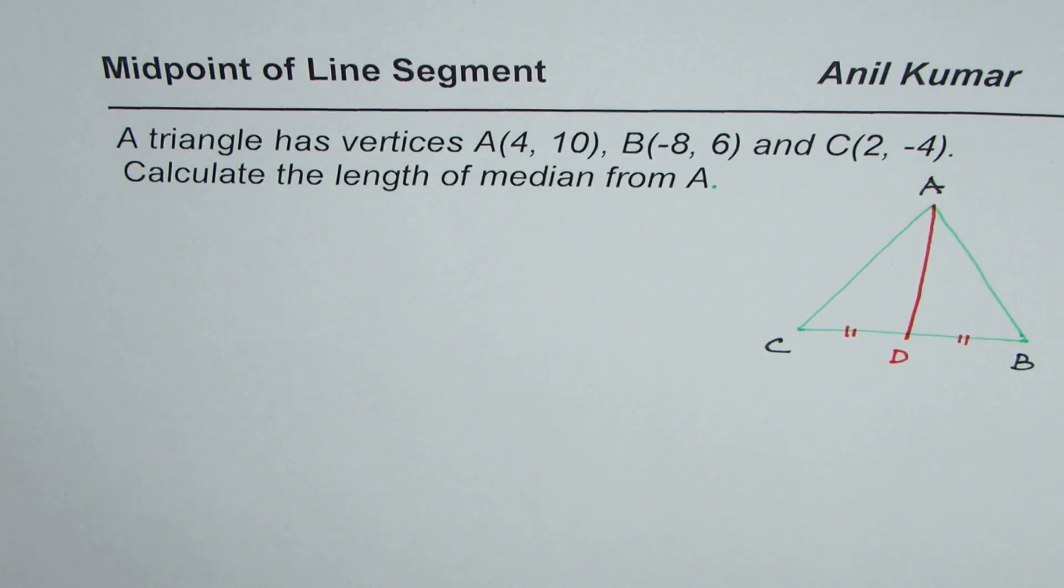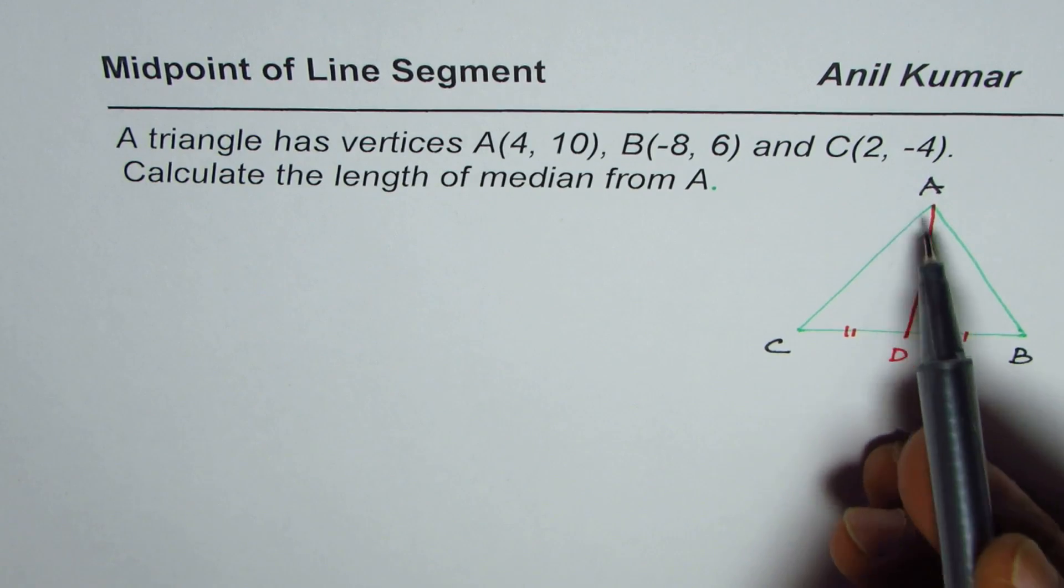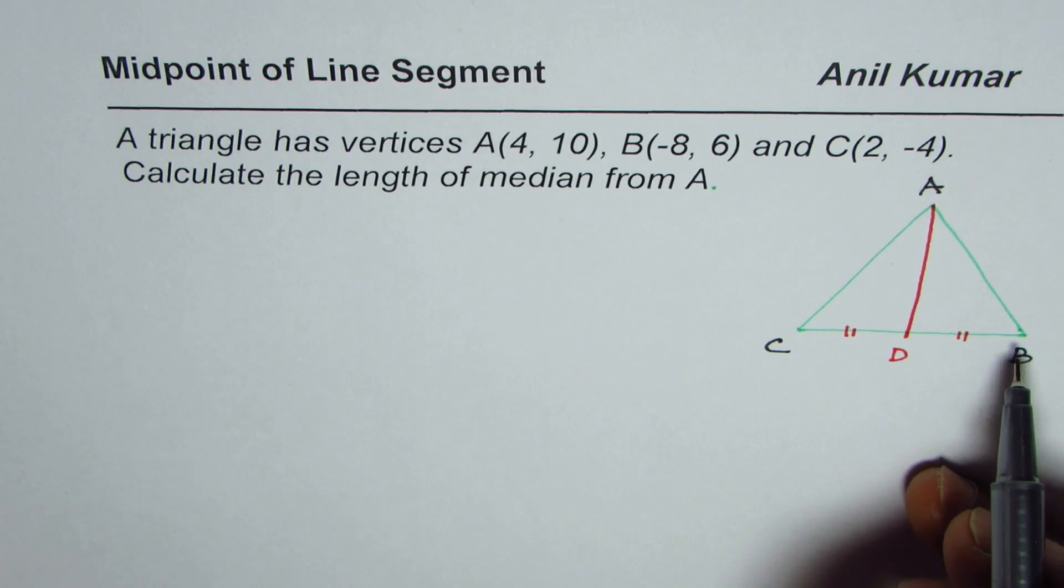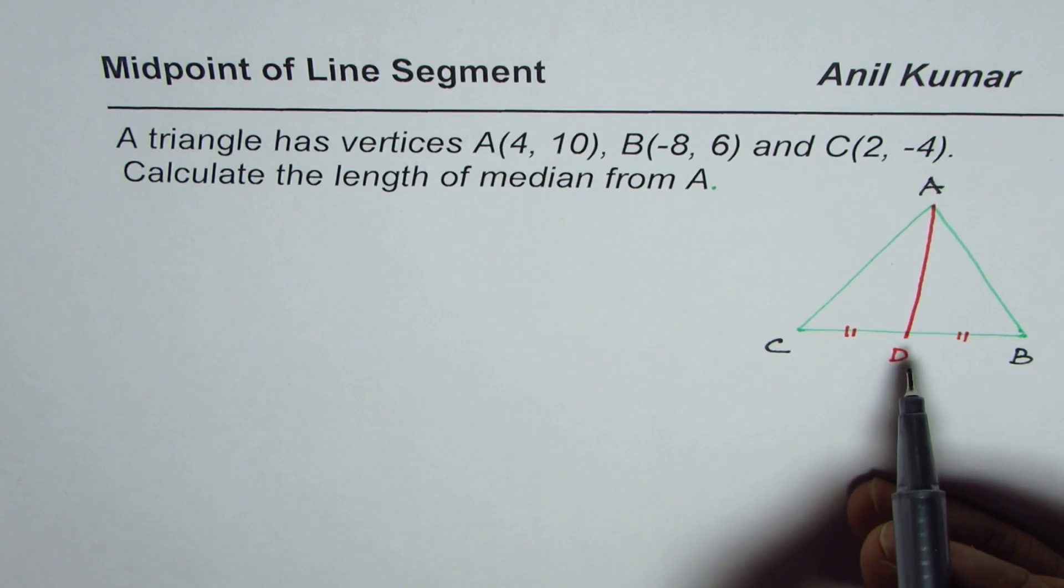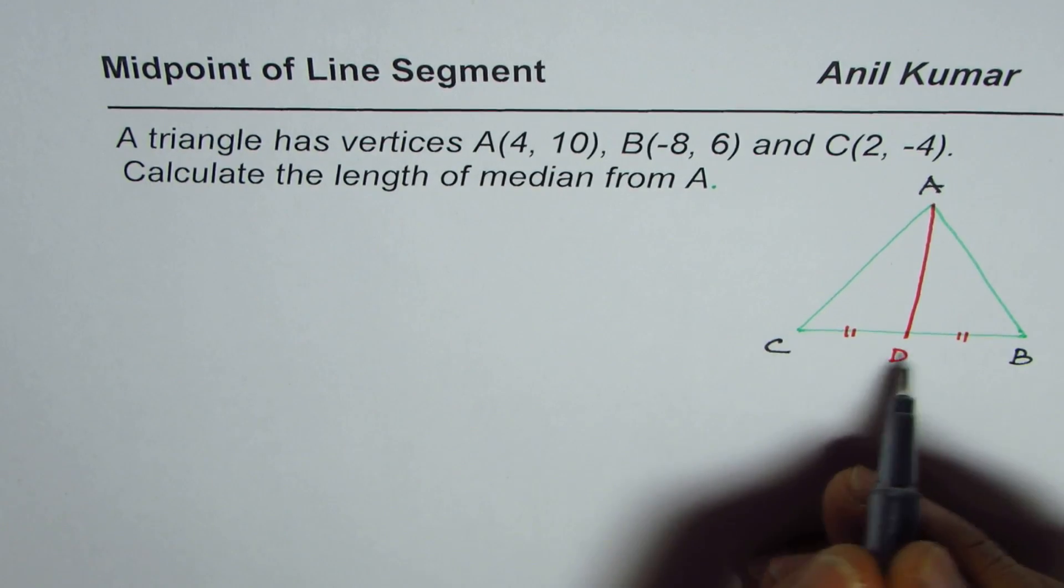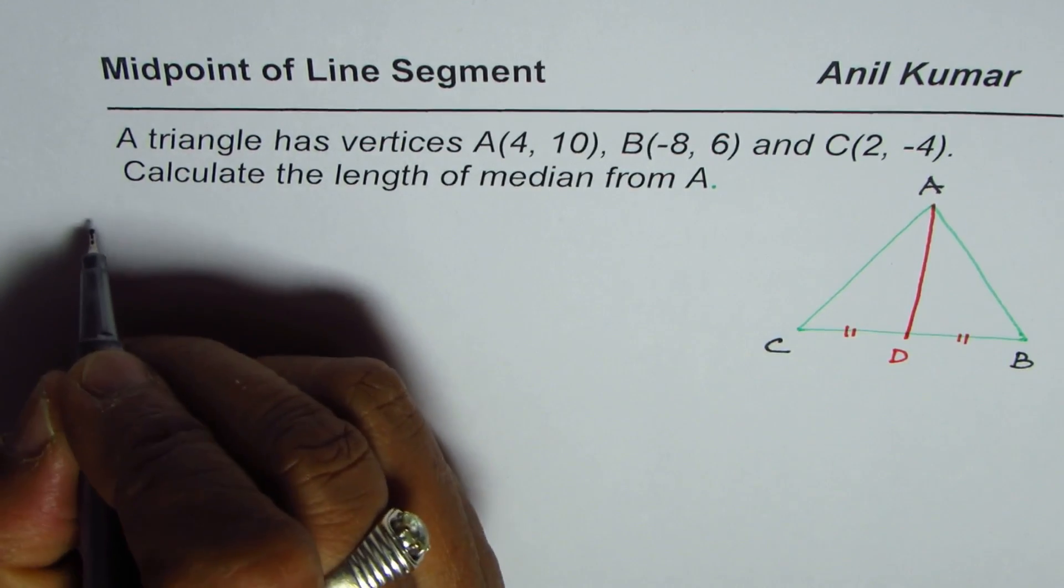Now to find the length of median AD, we need to first find the midpoint of CB and then use the distance formula to find distance between A and D. So let us find the midpoint of CB.